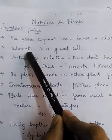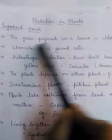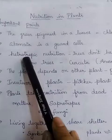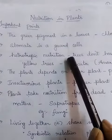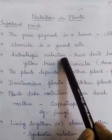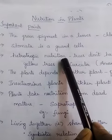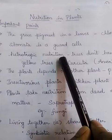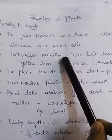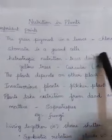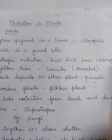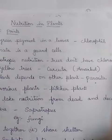Basically, plants are autotrophic — they can produce their own food because they contain chlorophyll. However, some trees do not have chlorophyll, so they depend on other plants